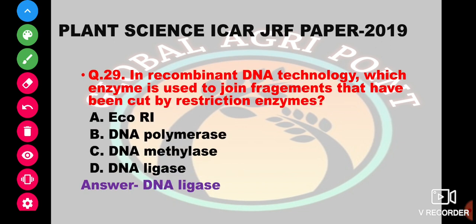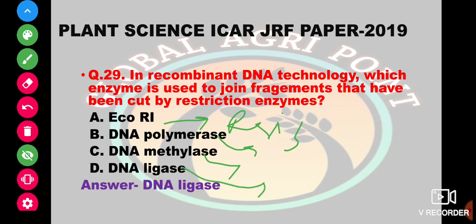In recombinant DNA technology, which enzyme is used to join fragments that have been cut by restriction enzymes? EcoRI is a restriction enzyme that cuts DNA at specific sequences. DNA polymerase synthesizes a complementary strand. DNA methylase adds a methyl group to DNA sequences. DNA ligase joins two fragments by phosphodiester bonds. So the answer is DNA ligase.